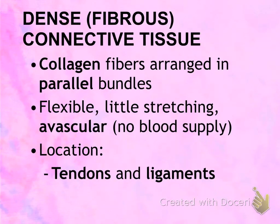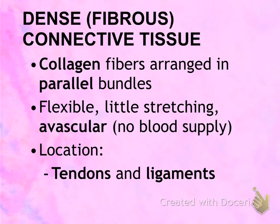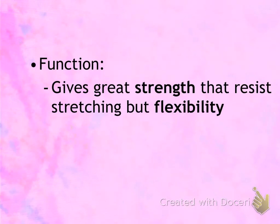The last connective tissue is the dense or fibrous connective tissue. It has lots of collagen fibers that run parallel to one another — this is important. Collagen fibers are thick, making this tissue very strong. It is flexible because it still has a gel-like matrix, but it resists stretching. Dense connective tissue is also avascular, meaning it has no blood supply. Locations include tendons and ligaments, and its function is to provide great strength without stretch while still allowing flexibility.